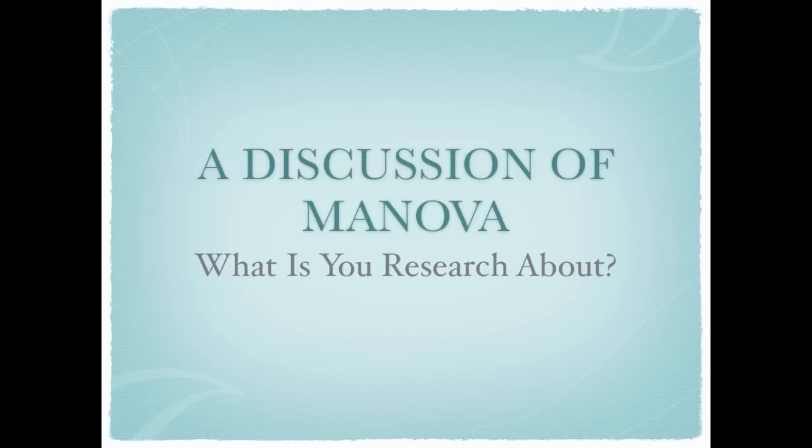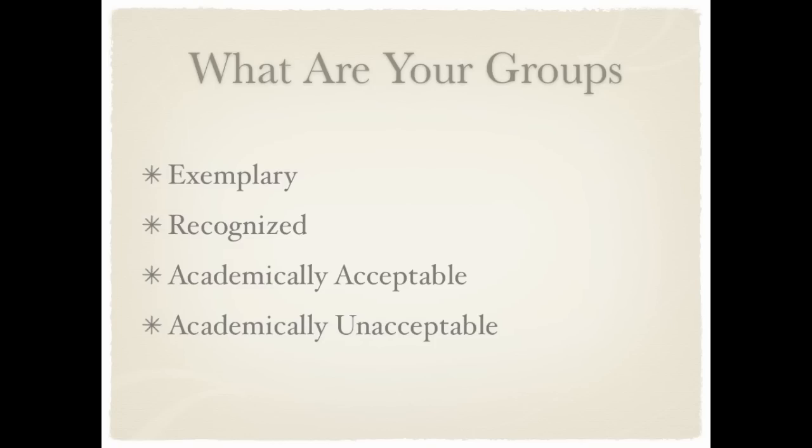This is a discussion of MANOVA—Multi-Factor Analysis of Variance. Your groups in the ratings of districts are broken down into four groups: Exemplary, Recognized, Academically Acceptable, and Academically Unacceptable. You need to find these out in the AEIS glossary and other places so that you describe them in your paper, as I pointed out in this module.